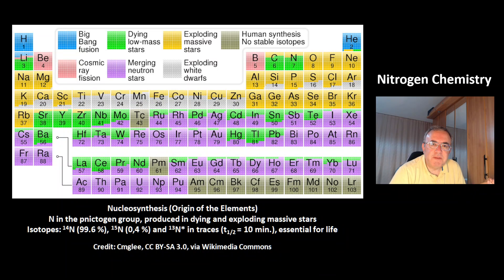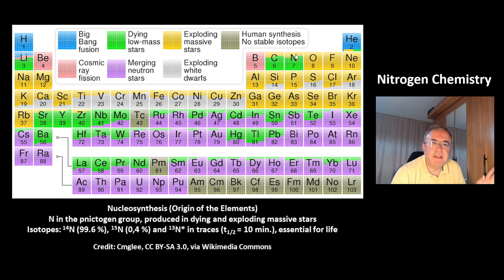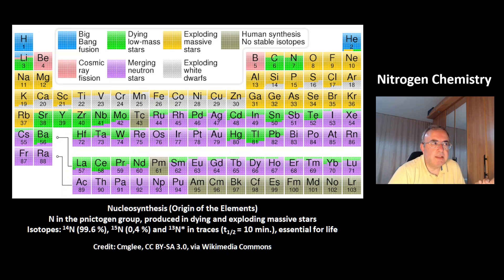This is a picture of the nucleosynthesis showing the origin of the chemical elements. Nitrogen is here — a member of the fifth main group in the periodic table, the nitrogen group. It is produced in dying stars and in exploding massive stars.